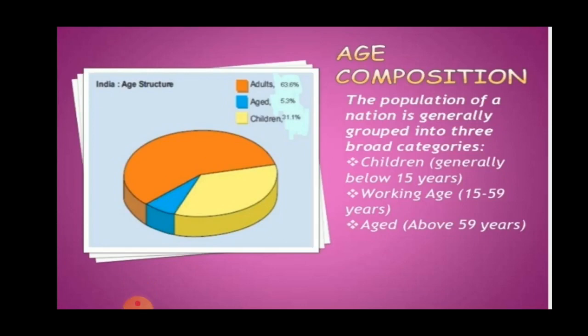The population of a nation is generally grouped into three broad categories. Population composition means the classification of the total population into various categories. The categorization is done as per male, female, age group, literacy rate, rural-urban areas, religions, linguistic groups, professional groups, etc. Study of these categories helps us to understand population composition.